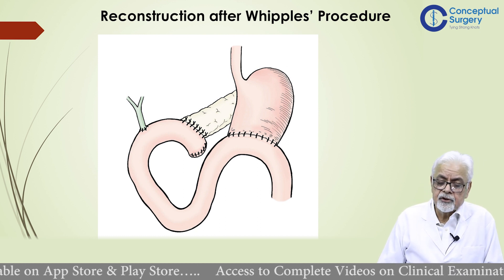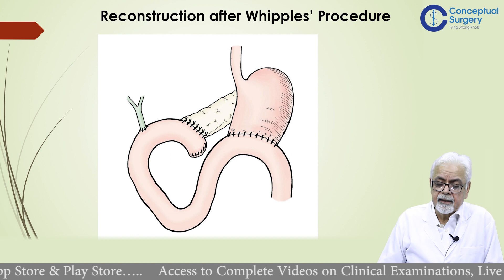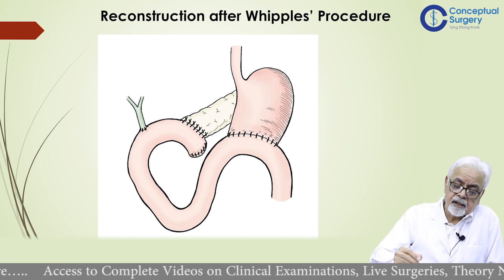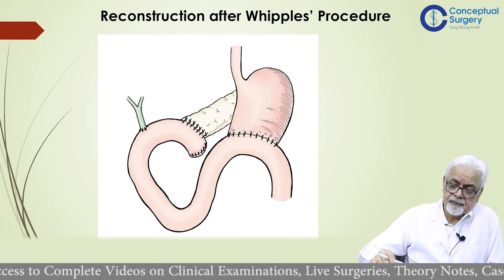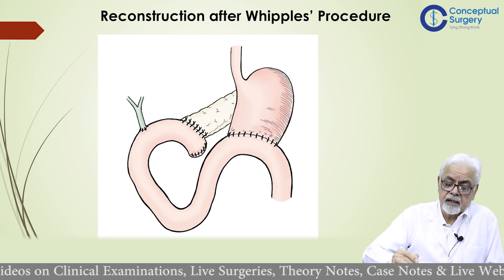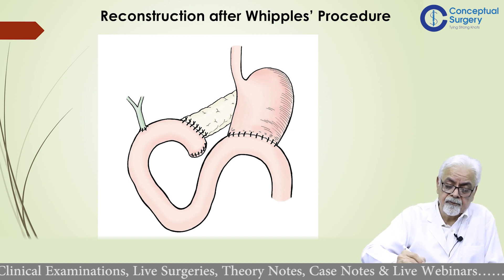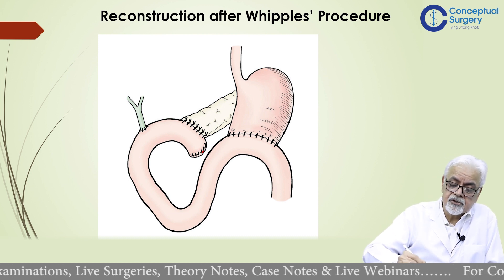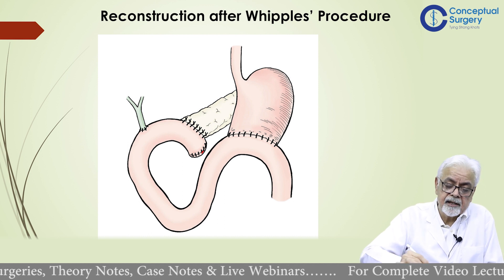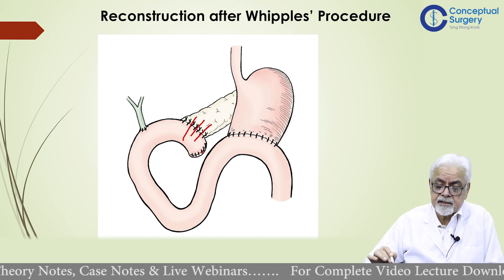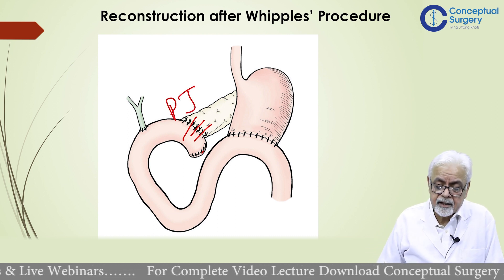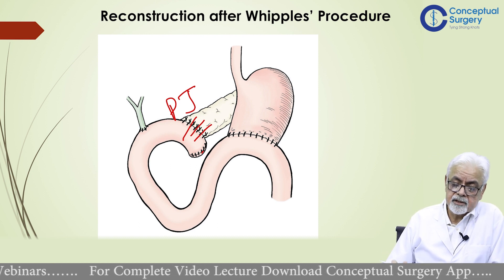This is the kind of reconstruction we do after Whipple's procedure. First, the divided end of the jejunum is used for anastomosis — end to side or side to side, depending on the approach. This is the pancreaticojejunal anastomosis, which could be a dunking anastomosis or a duct-to-duct anastomosis.